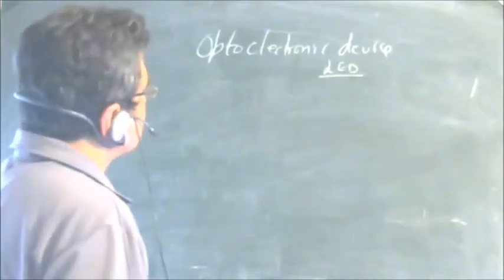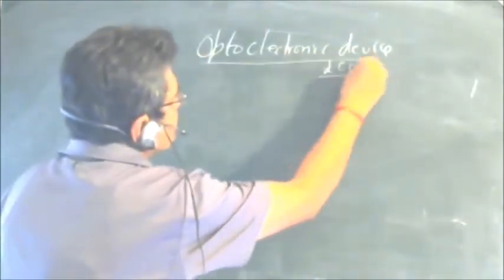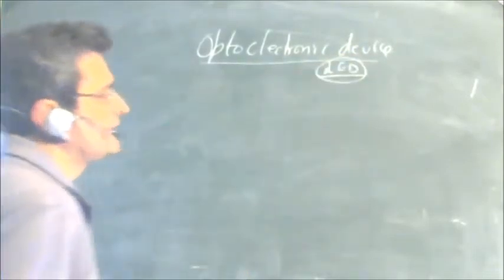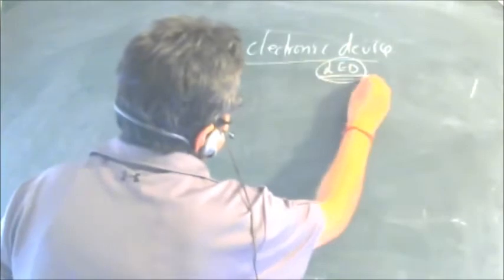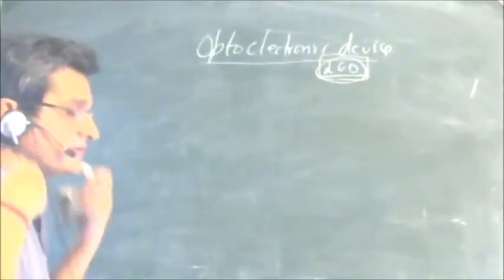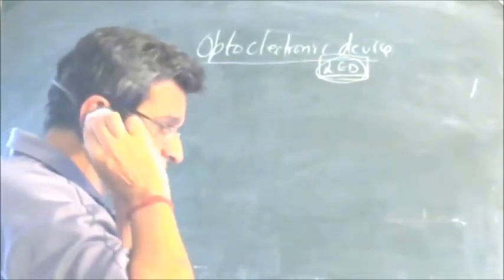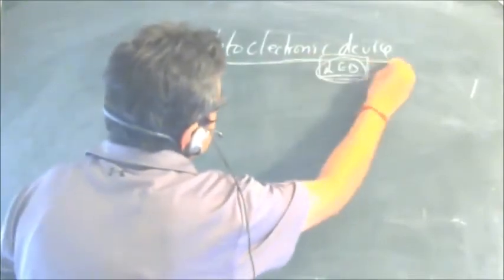In this video we'll cover the optoelectronic device: the LED, or light emitting diode. It is an optoelectronic device because it involves semiconductors, which make it an electronic device. It works on the principle that photons are emitted when current is passed through the LED.